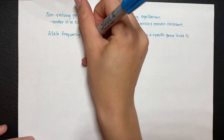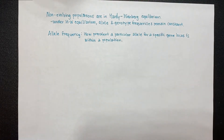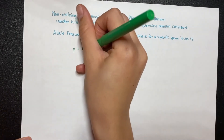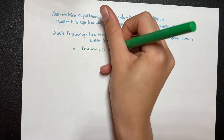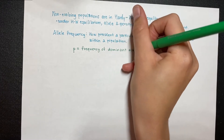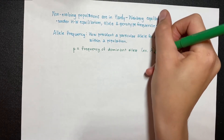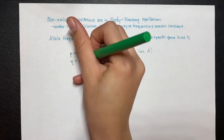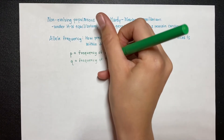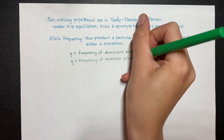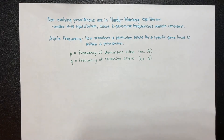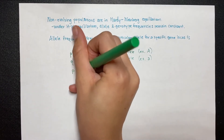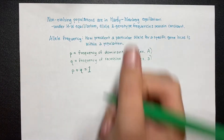We're going to learn two equations in Hardy-Weinberg equilibrium. The first one has two variables. Lowercase p represents the frequency of the dominant allele — dominant alleles are usually represented by uppercase letters like big A. Lowercase q represents the frequency of the recessive allele — recessive alleles are often represented by lowercase letters like lowercase a. In any population, when you add p and q, that should always equal one.